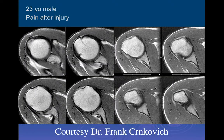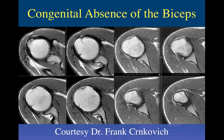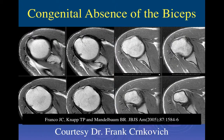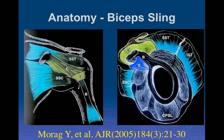Here's a 23-year-old male with pain after injury. Looking at multiple axial images, there's no biceps tendon visible and also no well-developed groove. This is actually a rare congenital absence of the long head of the biceps tendon — the short head is still there. The absence of a well-developed groove is the important diagnostic clue; otherwise it would almost always be diagnosed as a tear with distal retraction.